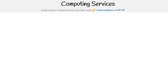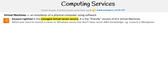So let's break this down with virtual machines, containers, and then serverless. For virtual machines, that's an emulation of a physical computer using software. EC2 is the main one, but for our VM category we have Amazon LightSail. This is a managed virtual server service — it's the friendly version of EC2 virtual machines.